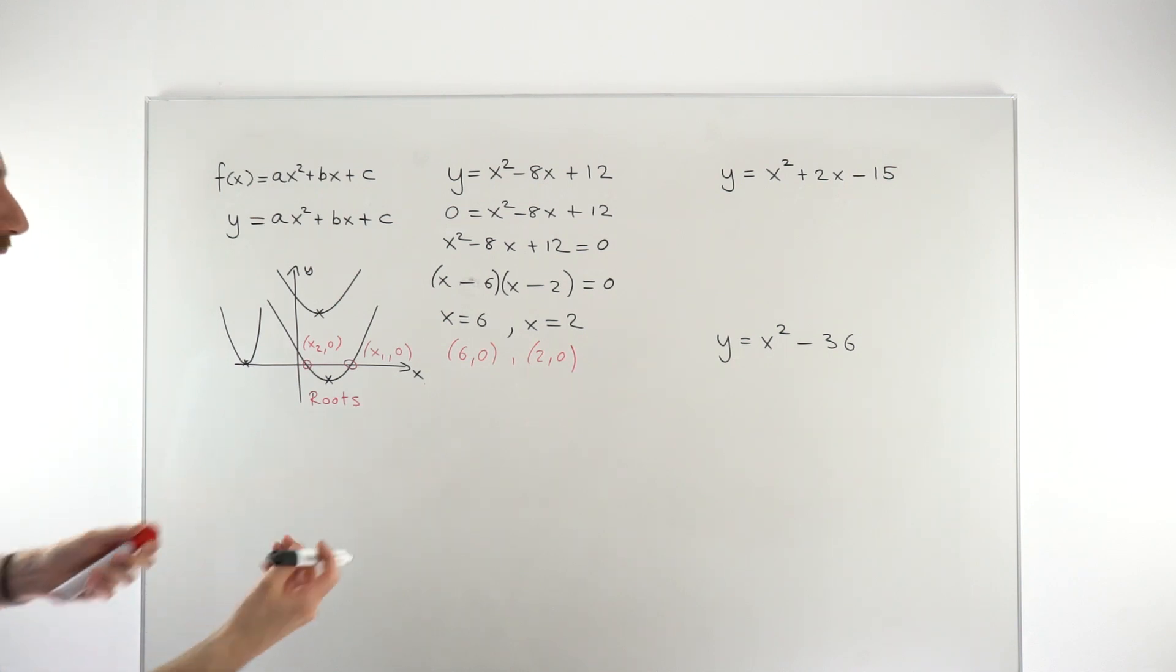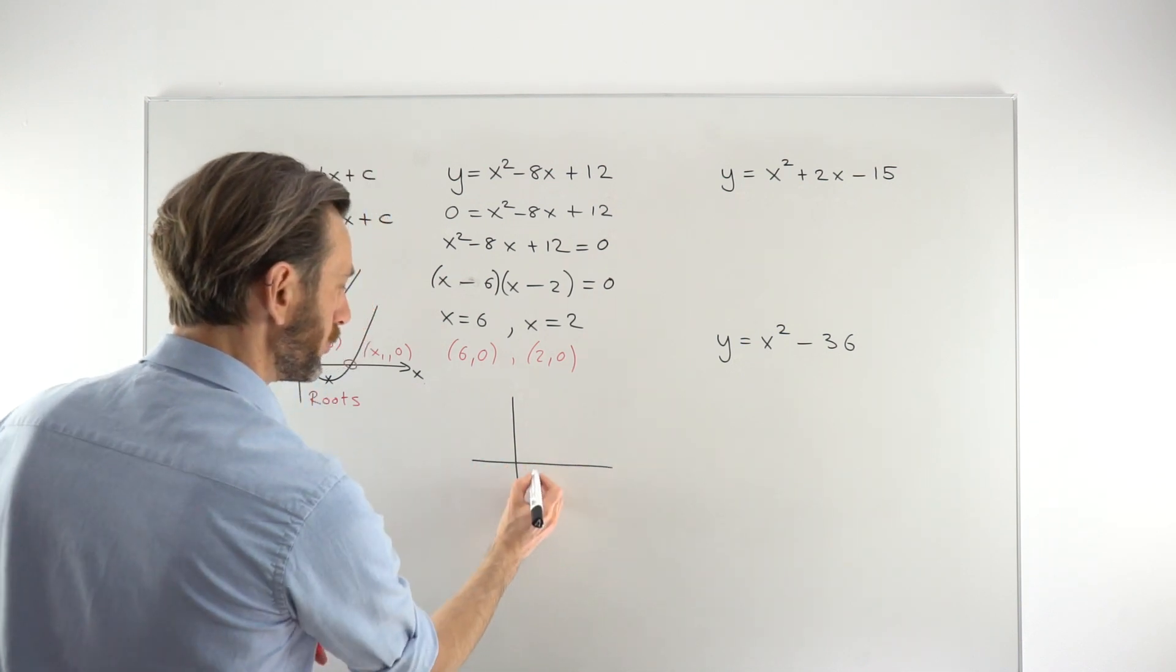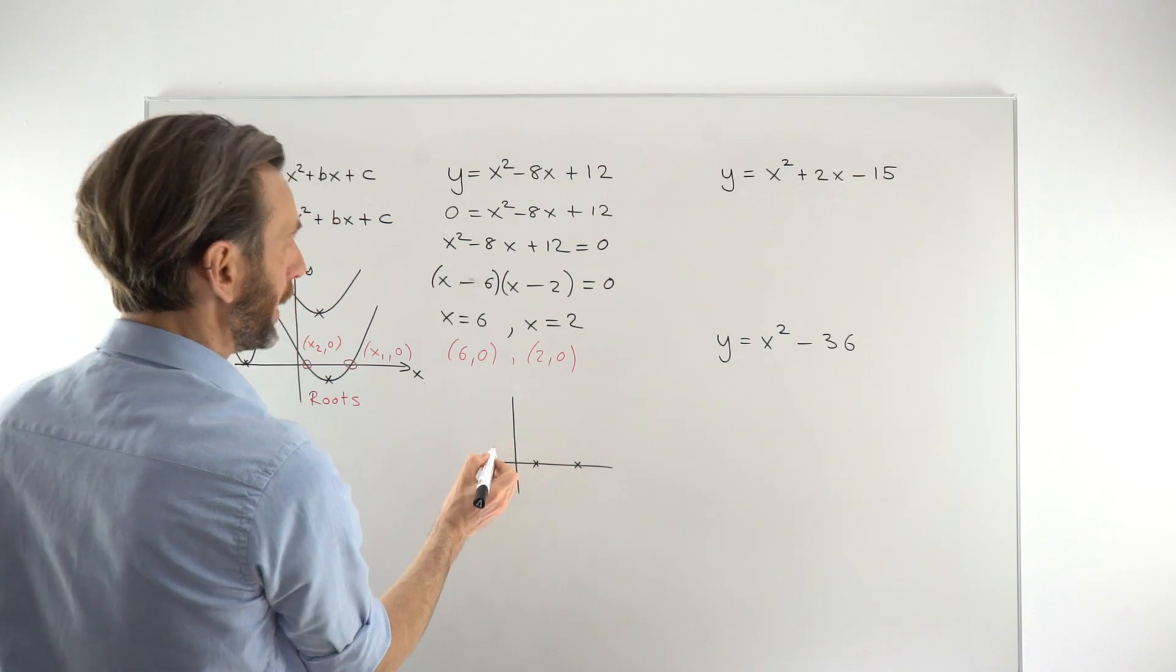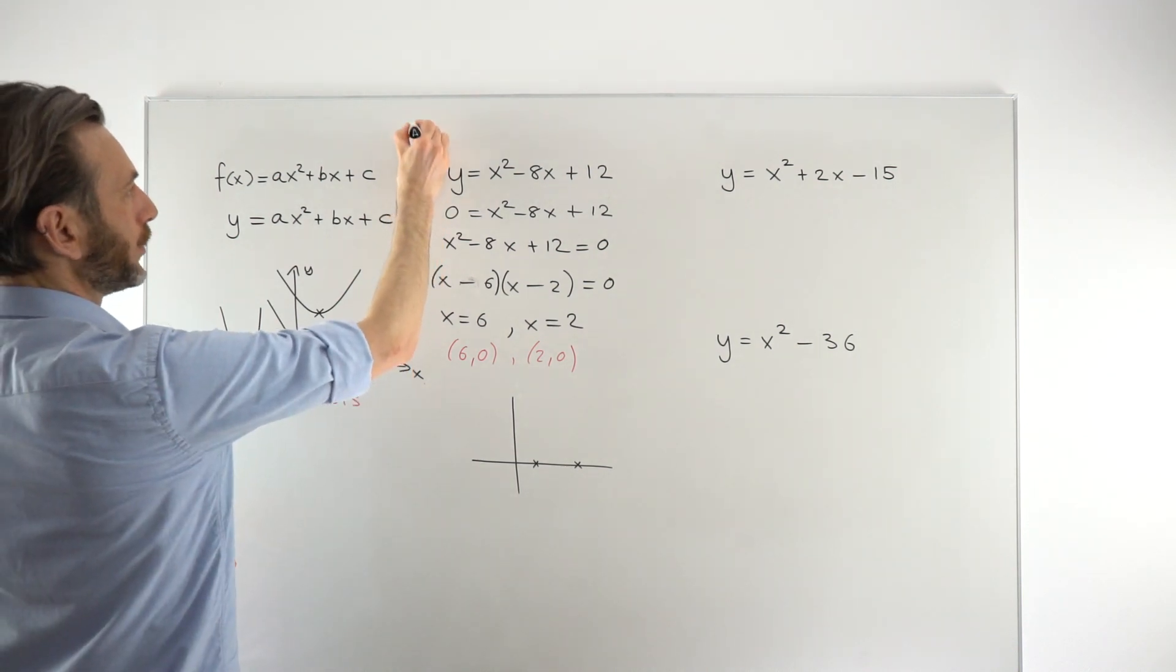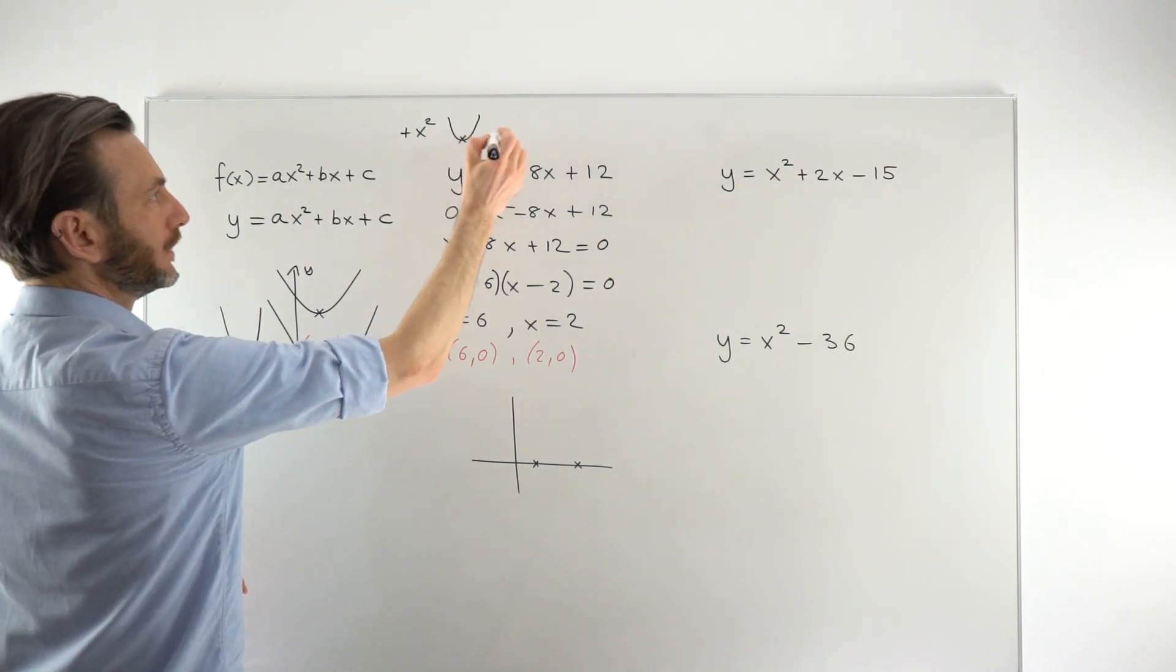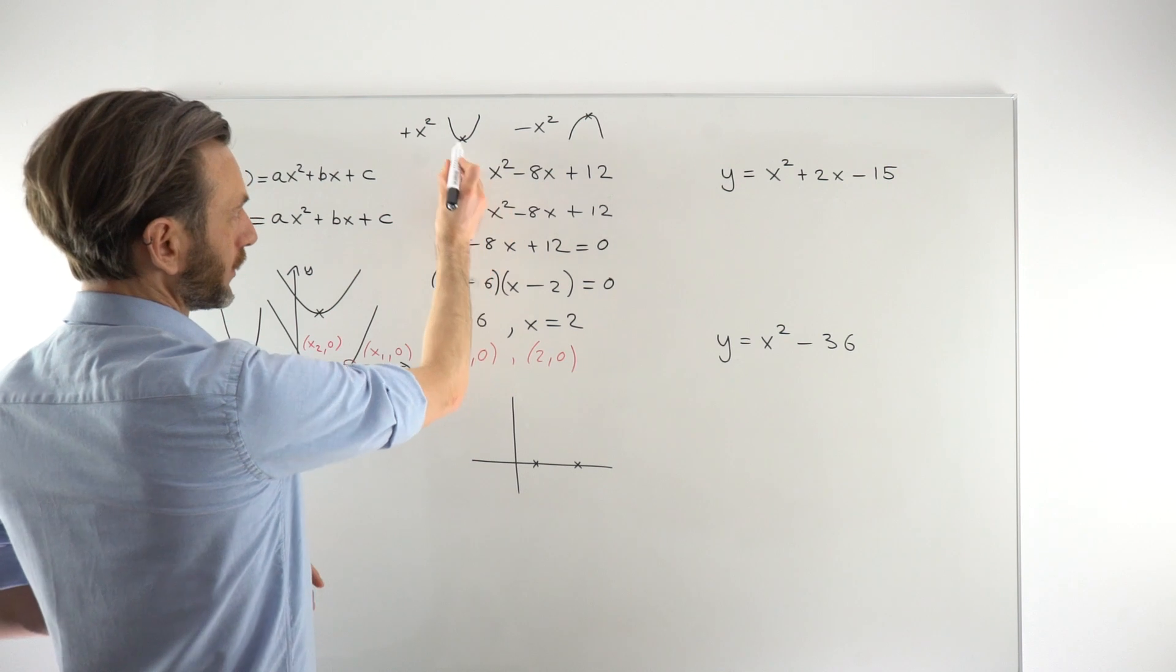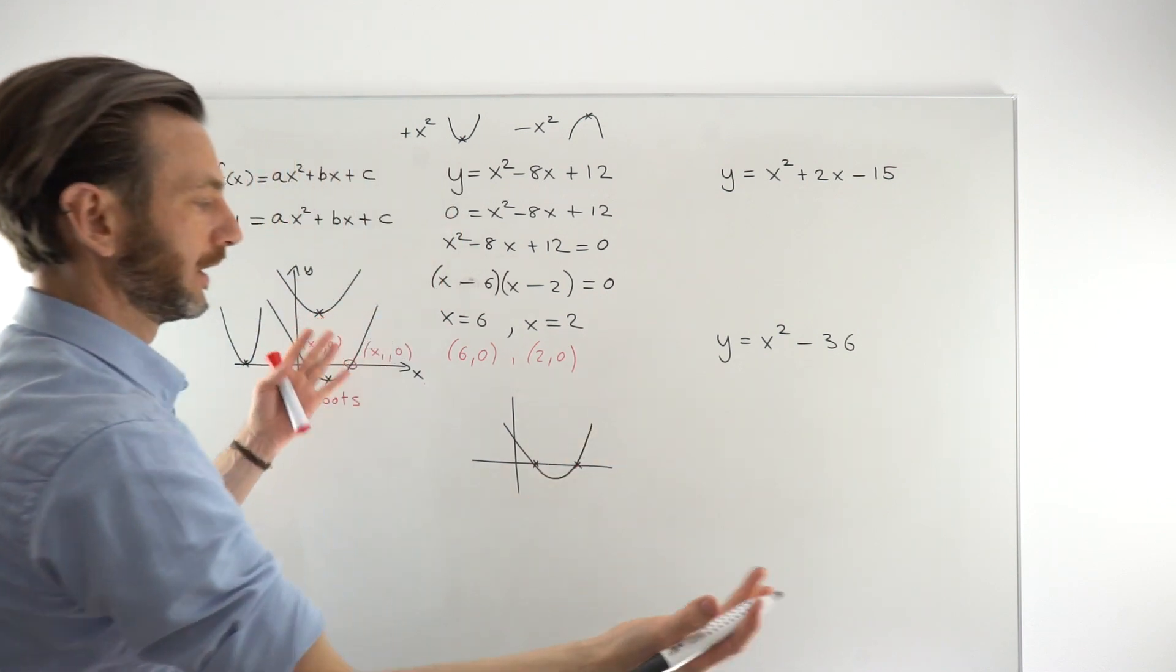We could then take that further if we wanted to and actually sketch a quick graph of that function. So just by knowing those two roots, we now know pretty much what the function looks like. That's 2 along, 0 up. 6 along, 0 up. We know that it's a parabola. We know that it's got a positive x-square term. So positive x-square terms, it's a parabola like this, which has got a minimum turning point. If it's a minus x-square term, then it's an upside-down parabola with a maximum turning point.